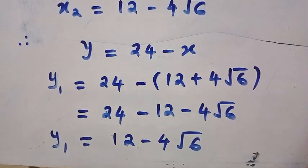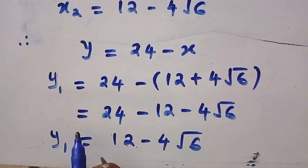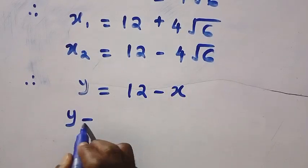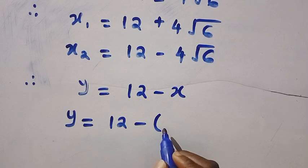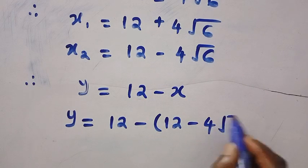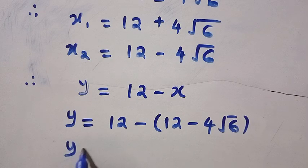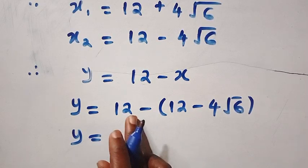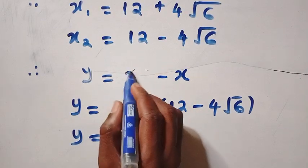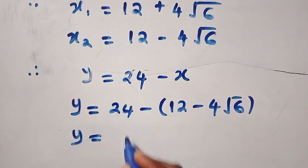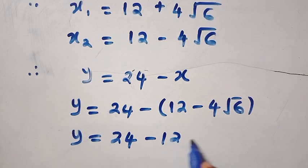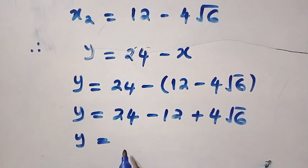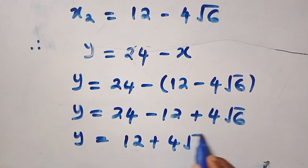We also find Y₂ by substituting X₂ equals 12 minus 4 root 6. Substituting X₂, we have Y equals 24 minus (12 minus 4 root 6). By expanding this: 24 minus 12 plus 4 root 6. This gives us Y₂ equals 12 plus 4 root 6.